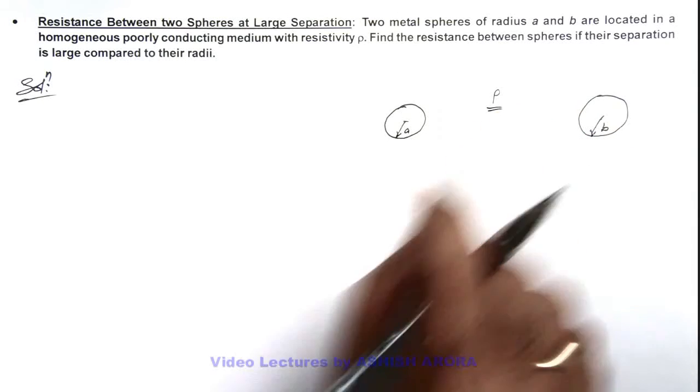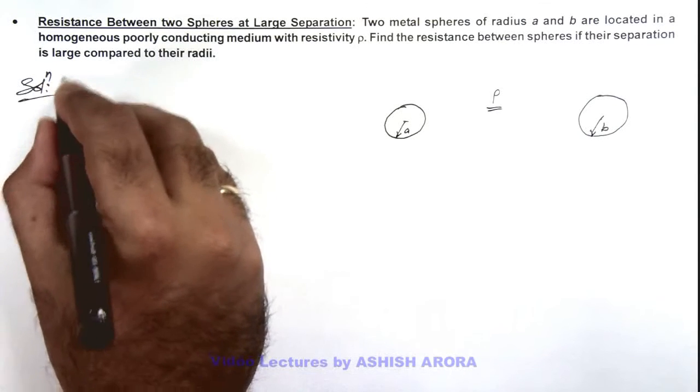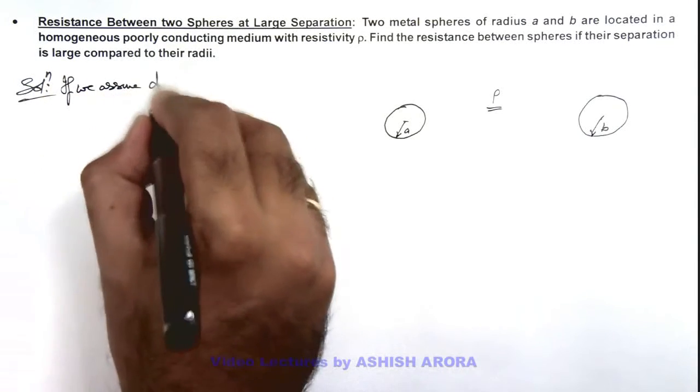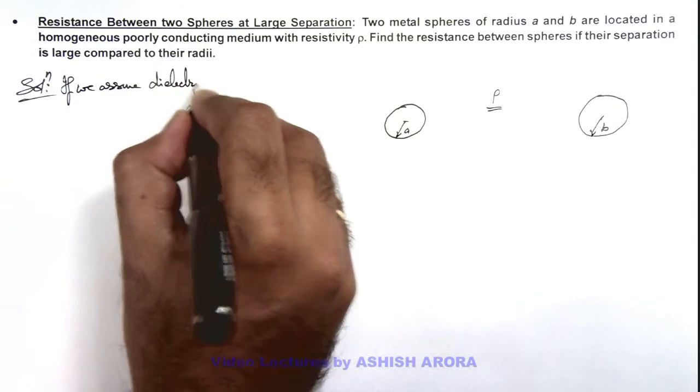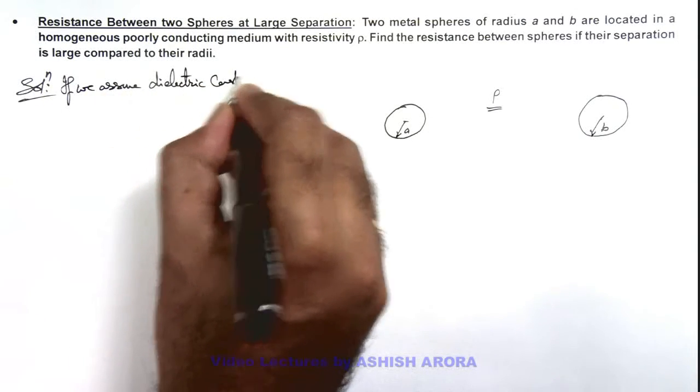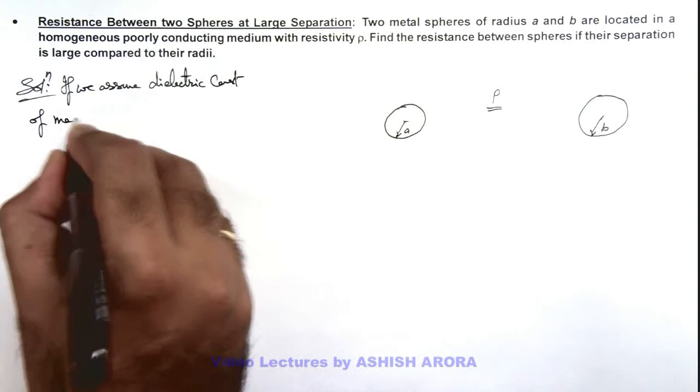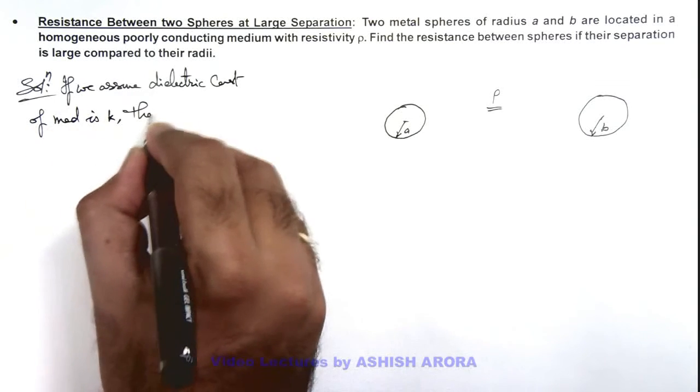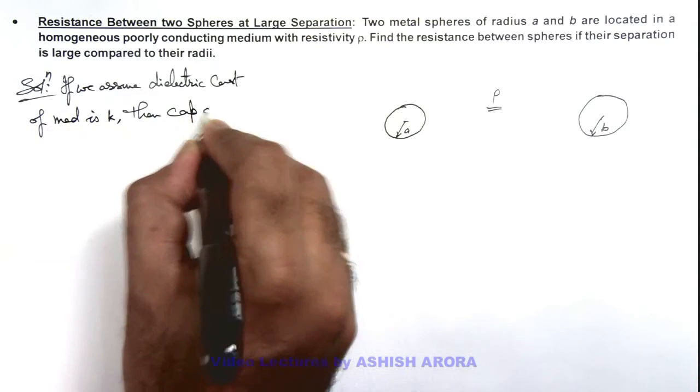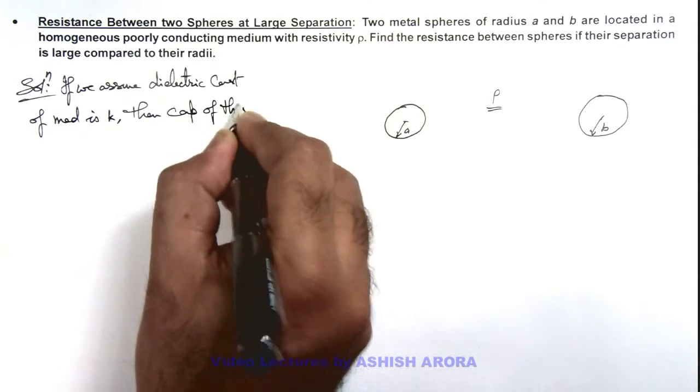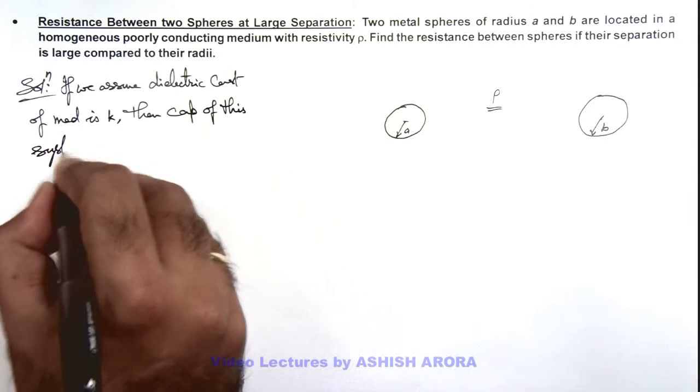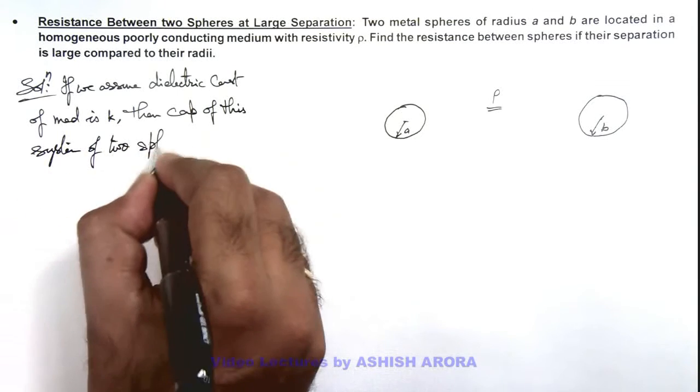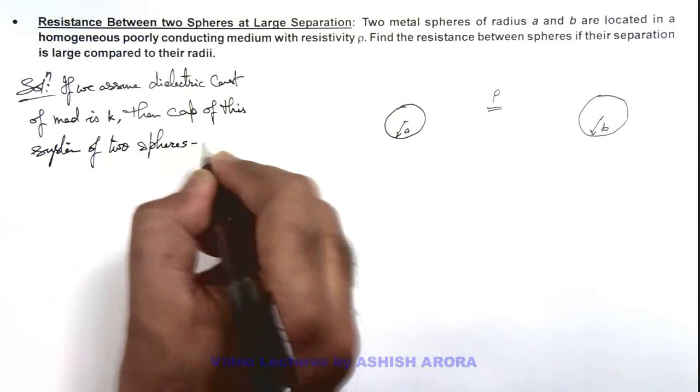Here in this situation, if we assume dielectric constant of medium is k, then capacitance of this system of two spheres, which is also termed as a sphere capacitor, is...